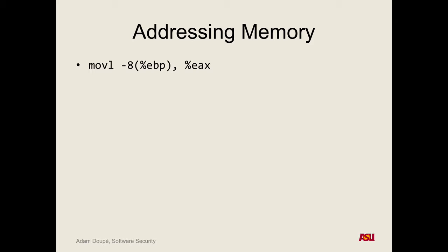A simpler example: 'movl -8(%ebp), %eax' — take EBP minus 8, whatever's at that memory address, take it and move it into EAX. Think of this as addressing fixed offsets from the base pointer EBP. EBP gets set up when a function starts executing, so we go down 8 bytes, access whatever integer is there, and copy it into EAX.